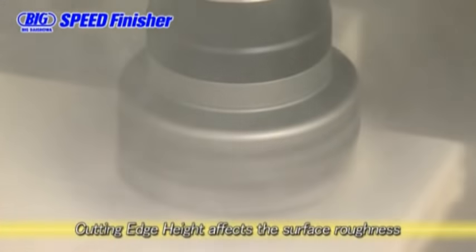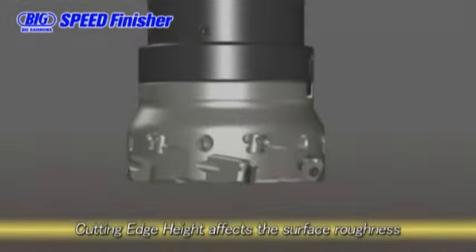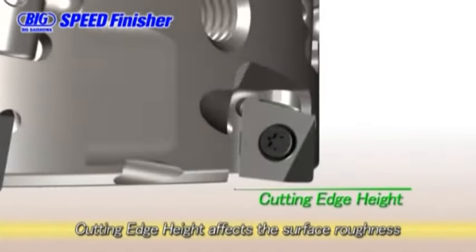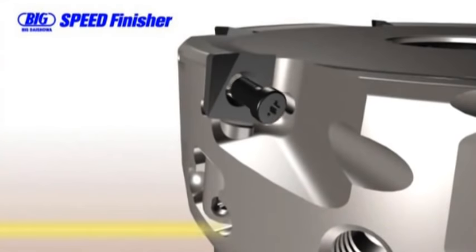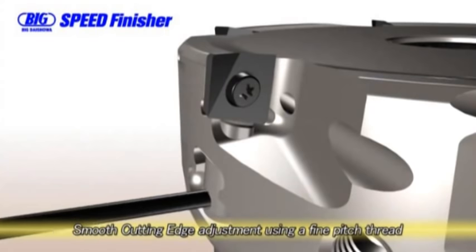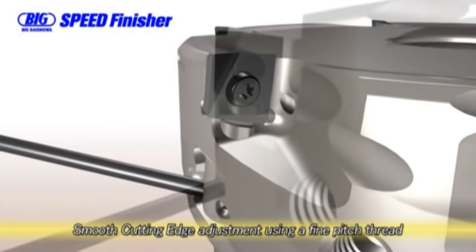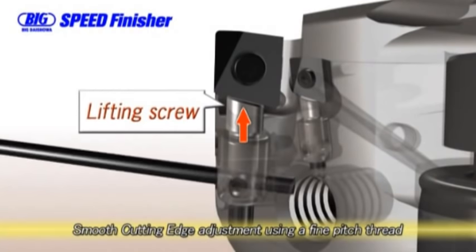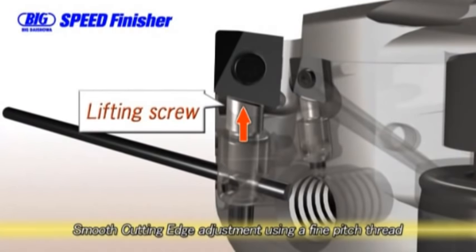In finished face milling, the cutting edge height needs to be precisely aligned to improve the surface roughness. With the Speed Finisher, the fine pitch lifting screw smoothly adjusts the insert by revolving the lifting nut after the insert is clamped. There is no need to lock the system after adjustment.